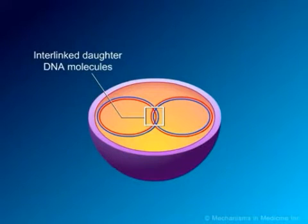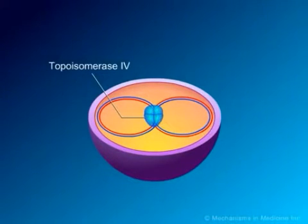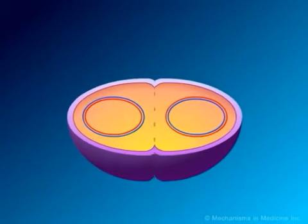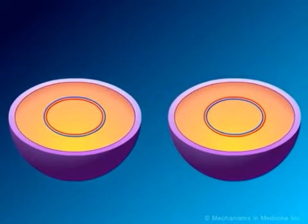In order to allow the two new interlinked chromosomes to come apart, another bacterial enzyme is needed, which is known as topoisomerase 4. This enzyme is structurally related to DNA gyrase and is coded for by the PARC and PARE genes. Topoisomerase 4 allows the two new interlinked chromosomes to separate so that they can be segmented into two new daughter bacterial cells.